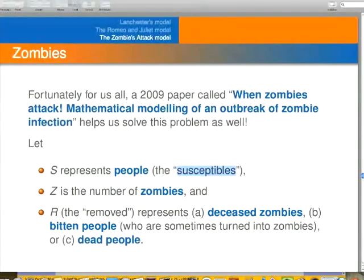But S stands for susceptibles. That's going to be one of the dependent variables. Z, of course, is the number of zombies. And R is the removed.